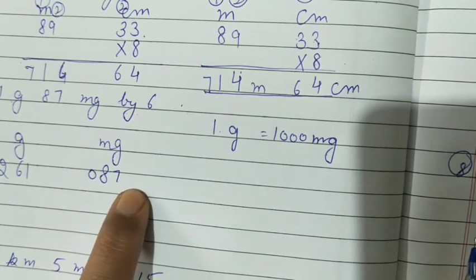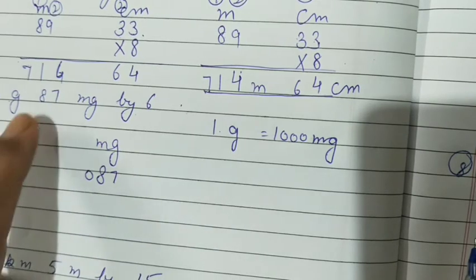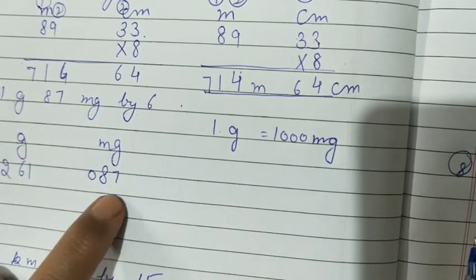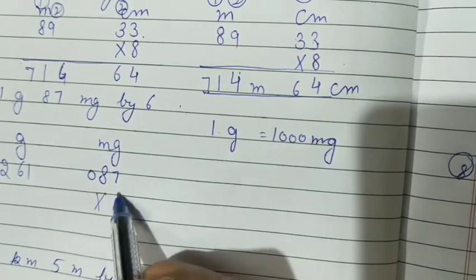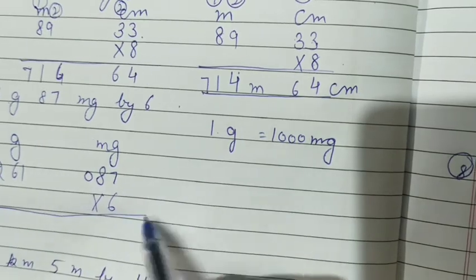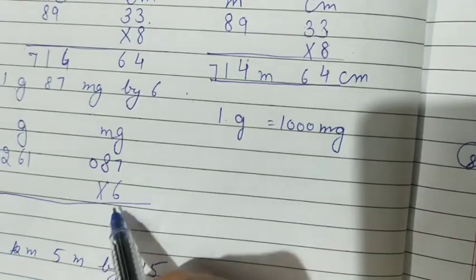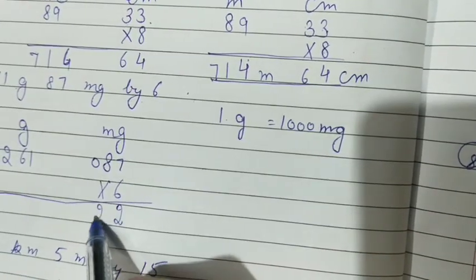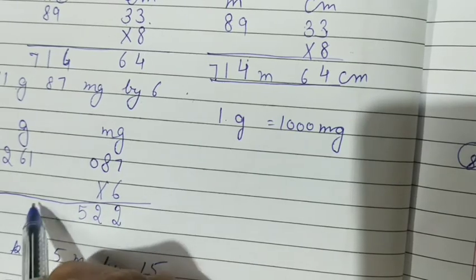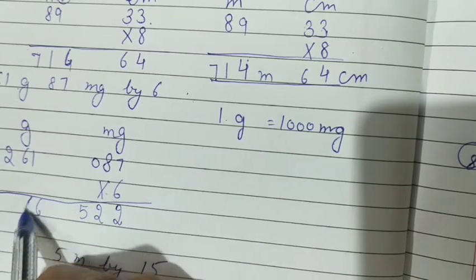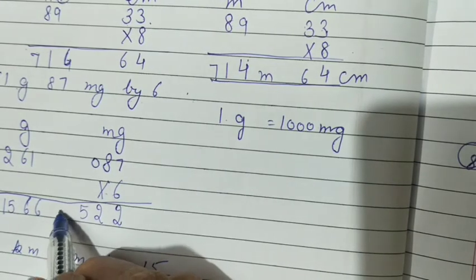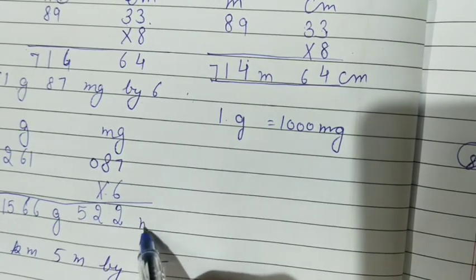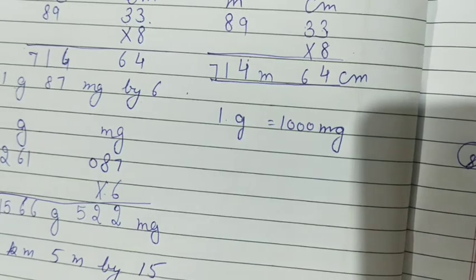87 milligram, so how will we write? 0, 87. Because we have given only 87 milligram, we have given only 87. Now multiply by 6. Simple multiply. 6 times 7 is 42, 6 times 8 is 48, 6 times 0 is 0, 6 times 1 is 6, 50. So answer will be 1566 gram and 522 milligram.